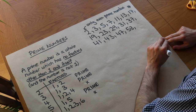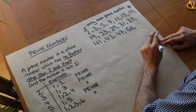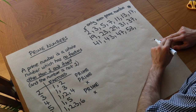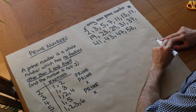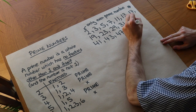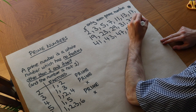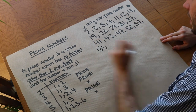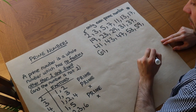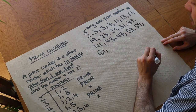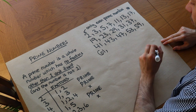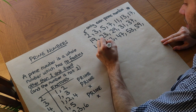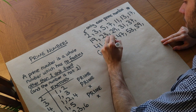Fifty-seven: the digits add up to 12, which is a multiple of three, so it's not prime. Fifty-nine is prime. Sixty-one is prime. Sixty-three is not prime because it divides by three. Sixty-five ends with a five. Sixty-seven is prime.